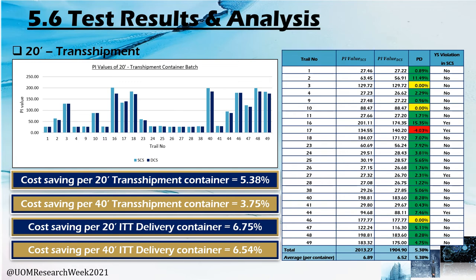The test results were calculated under four container categories. For 20-foot transshipment containers, for each trial we calculated the performance indicator value for locations determined by yard planners and locations determined by the developed dynamic container stacking model. Both PI values and the performance deviation value were calculated.